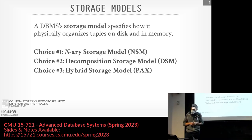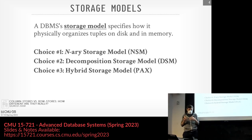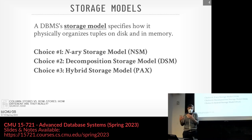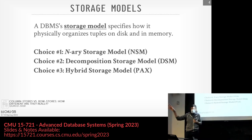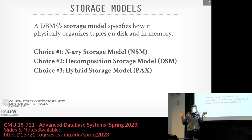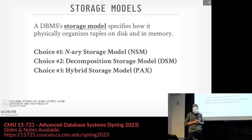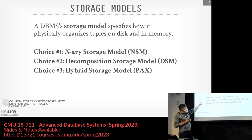A storage model defines how the database system physically organizes tuples on disk and in memory. In a modern OLAP system or data lake model, it could be S3 buckets with CSV or Parquet files that the system just reads. There are three choices: N-ary storage (the row store), the Decomposition Storage Model (the column store), and the hybrid PAX model.